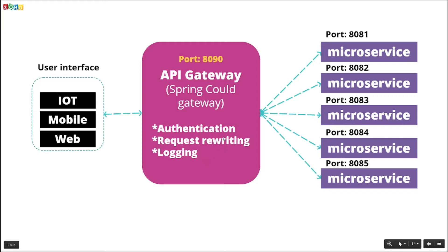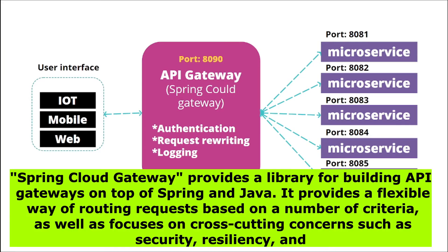We can rewrite the request before sending it to services — for example, we can add headers, add content type, or remove anything. We can also log all requests and responses before and after sending. Here we are going to use Spring Boot Gateway. Spring Boot Gateway provides a library for building an API gateway on top of Spring and Java, and it provides a flexible way of routing based on a number of criteria.